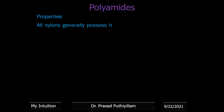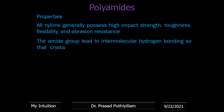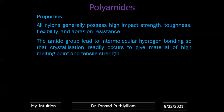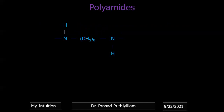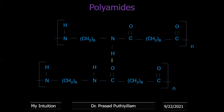Properties of all nylons: they generally possess high impact strength, toughness, flexibility, and abrasion resistance. The amide group leads to intramolecular hydrogen bonding, which promotes crystallization, giving a material with high melting point and high tensile strength. The CO group of one chain interacts with the NH group of another nearby chain, forming hydrogen bonds. This close packing increases crystallinity and strength.